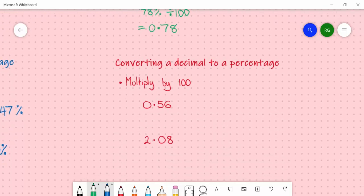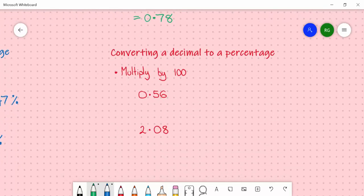Moving on to converting a decimal to a percentage. This is again the opposite to what we just did in green. Now instead of dividing, we're going to multiply by 100.